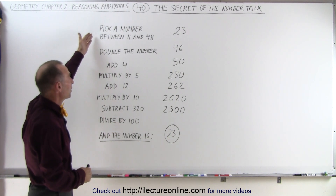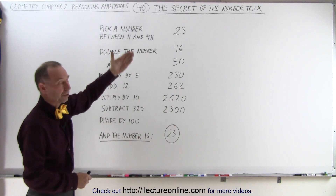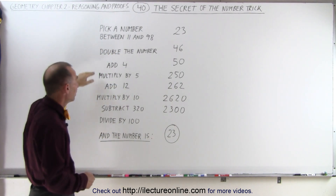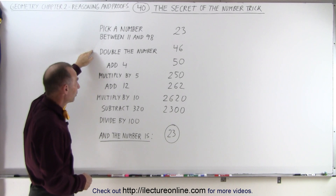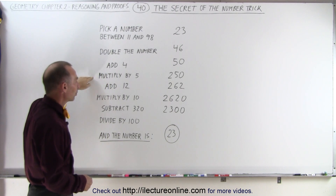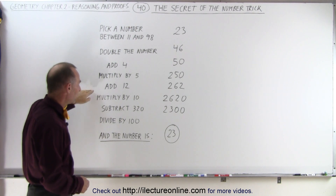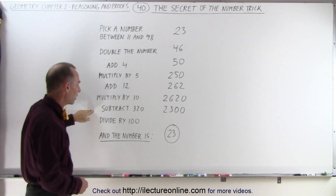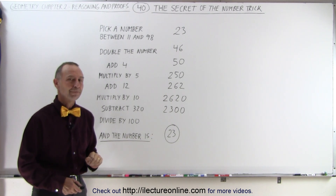Remember, we picked a number between 11 and 98 — so we picked an arbitrary number, let's say 23. We then doubled the number, added 4, multiplied it times 5, added another 12, then multiplied by 10, subtracted 320, divided by 100, and we got the same number we started with.